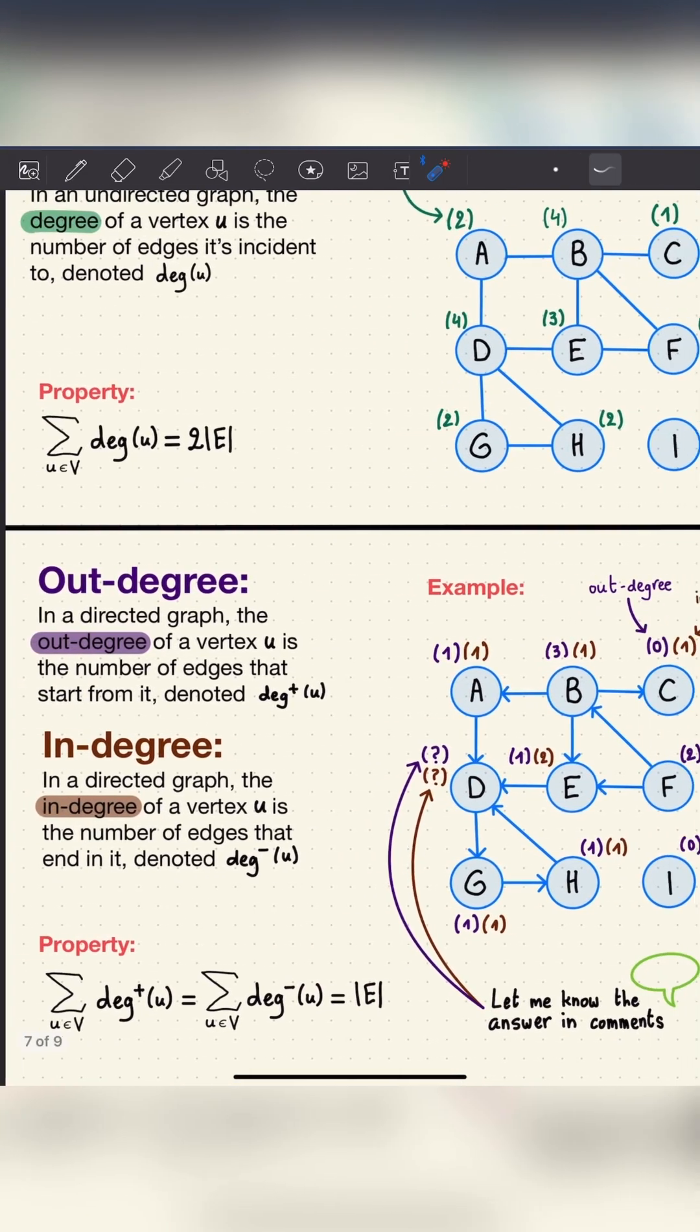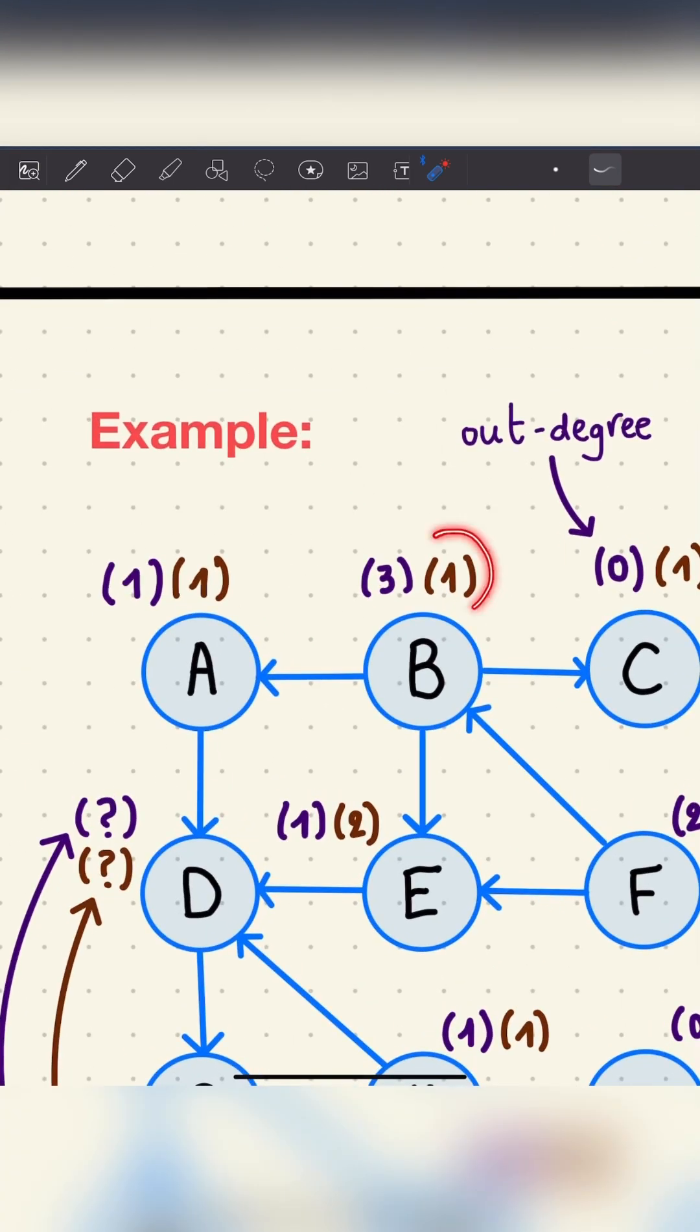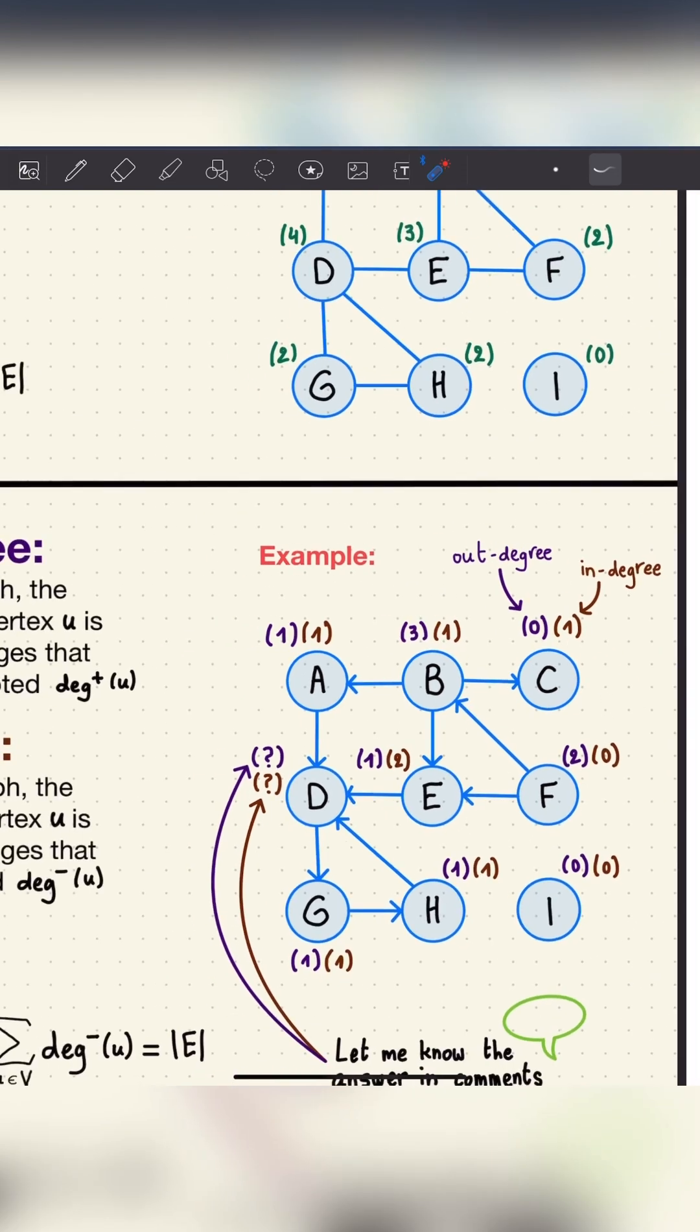And we have the indegree. The indegree of a vertex u is the number of edges that end in it. For example, here b has an indegree of 1 because it has 1 edge going in it.